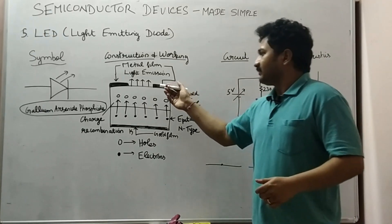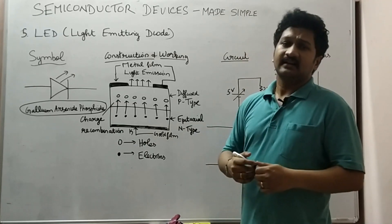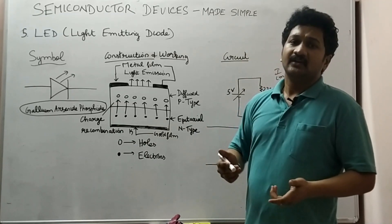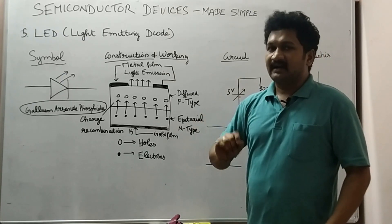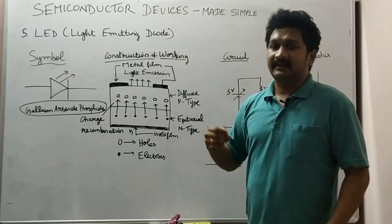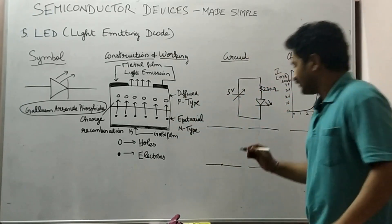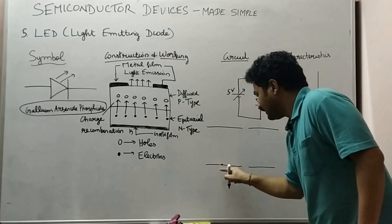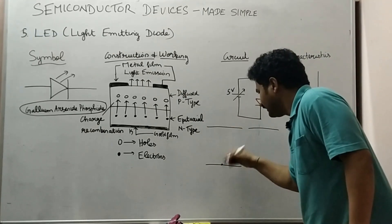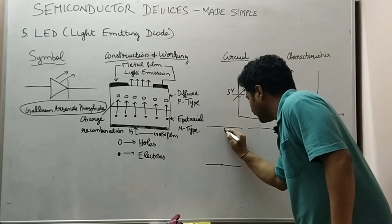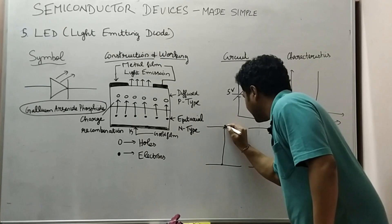When we come to the working of a light emitting diode, once the diode is forward biased there are several processes happening. Electrons get excited from the valence band to the conduction band when some energy is given. When the diode is forward biased, the electrons in the valence band move to the conduction band by absorbing some energy.